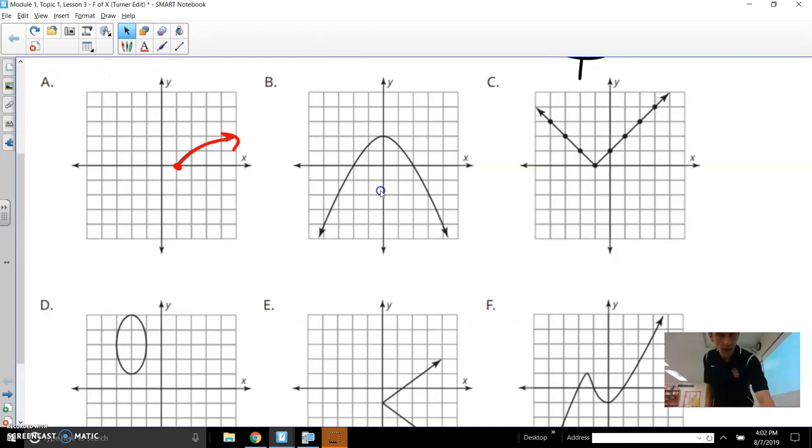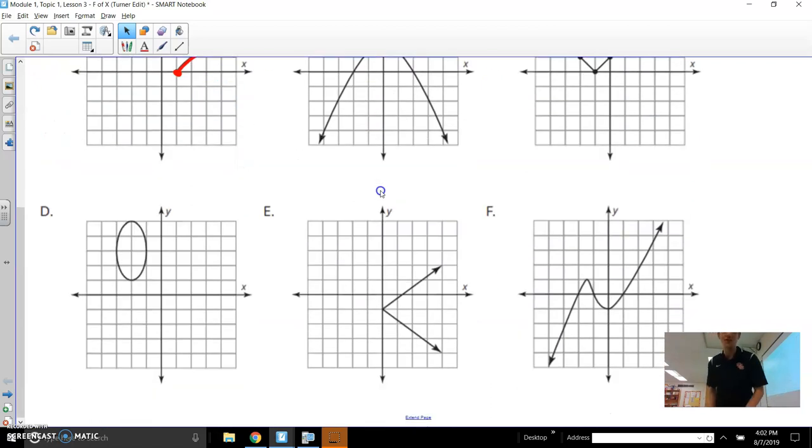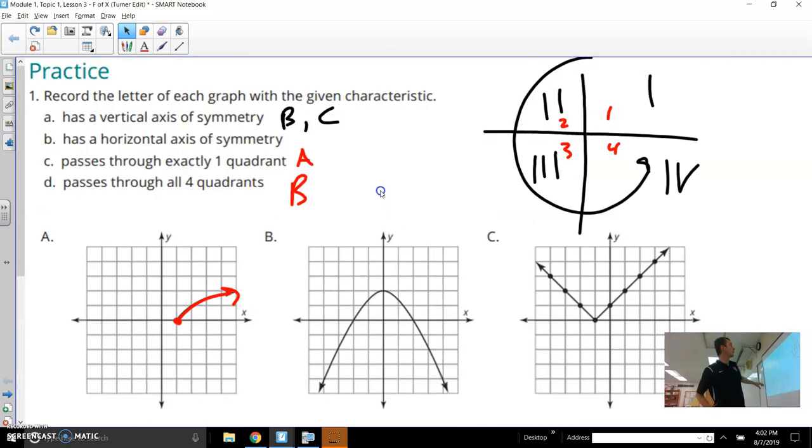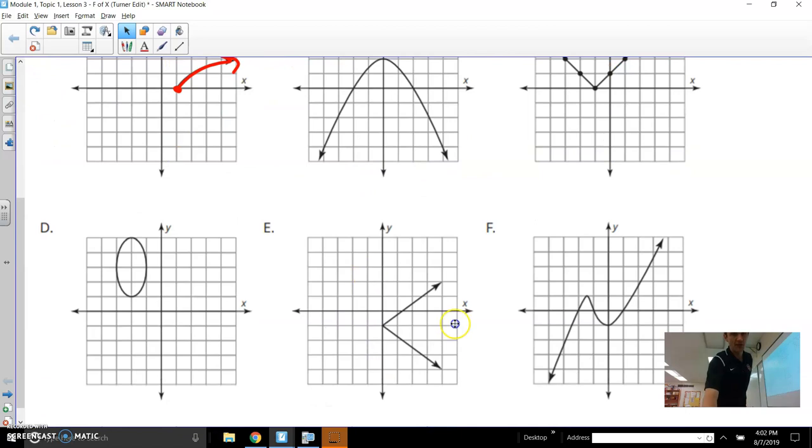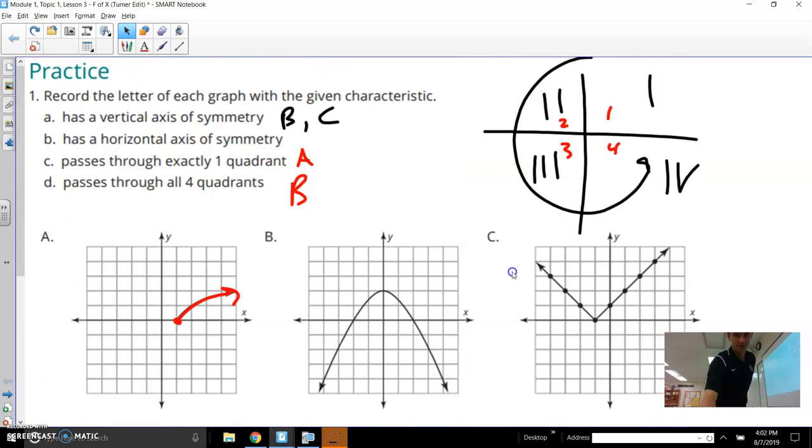Let's move on. I have a few more that I want you to do. So I want you to look at each of these. I only talked about A, B, and C. So if you could just throw D, E, and F also up into either A, B, C, or D, depending on what you believe it has. Does it have a vertical axis symmetry? Do you think it has a horizontal axis? Does it pass through exactly one quadrant? Or is it really going through all four quadrants?